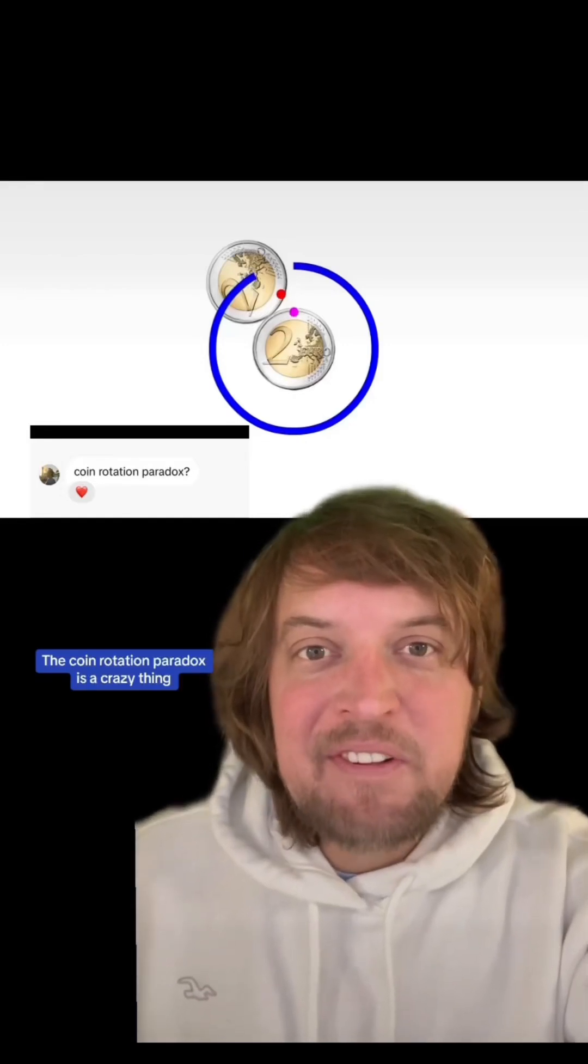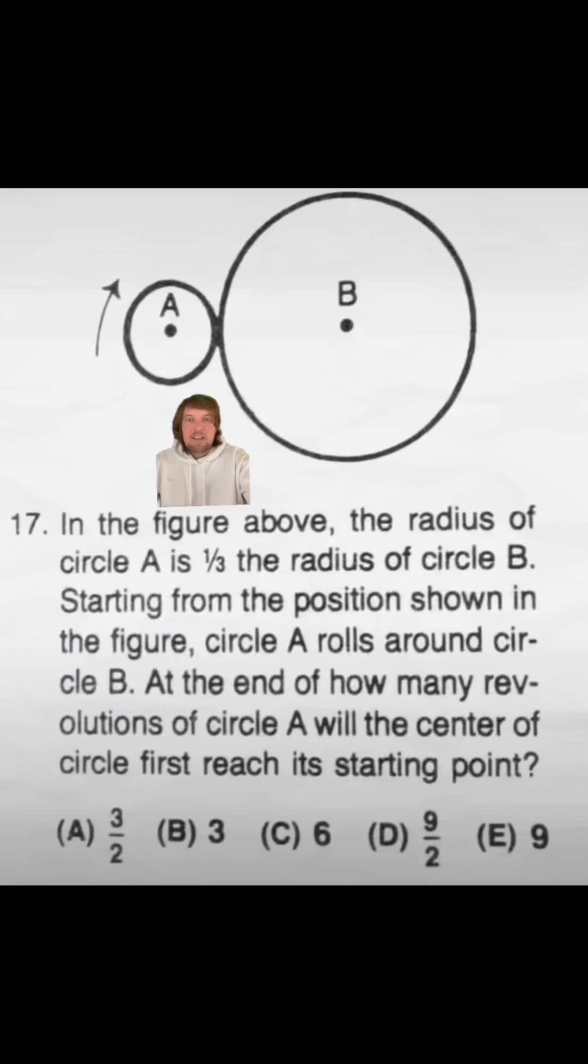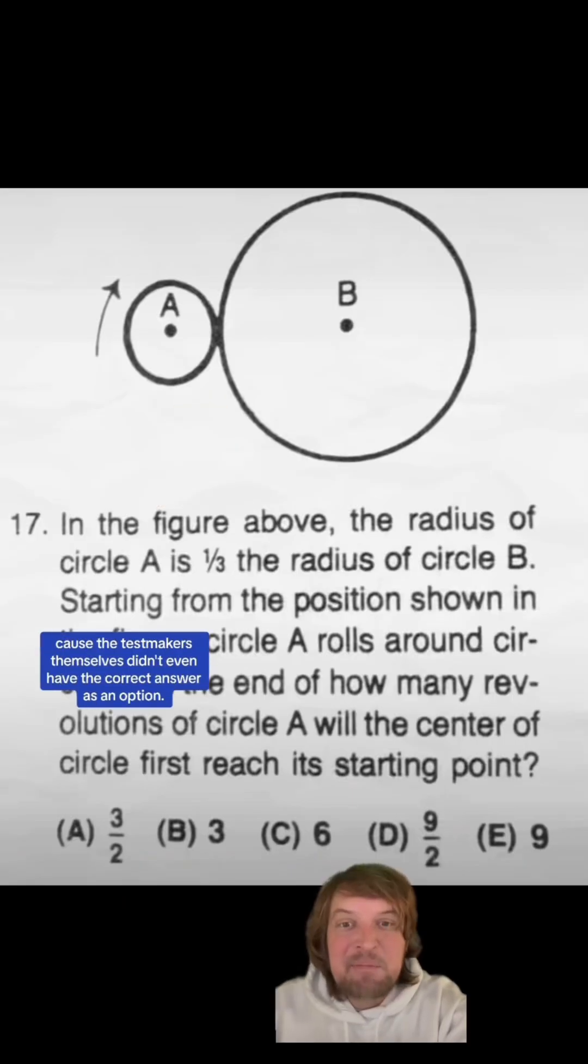The coin rotation paradox is a crazy thing that happens when you rotate a coin around the outer edge of another coin. In 1982 there was an SAT question about it that literally everyone got wrong because the test makers themselves didn't even have the correct answer as an option.